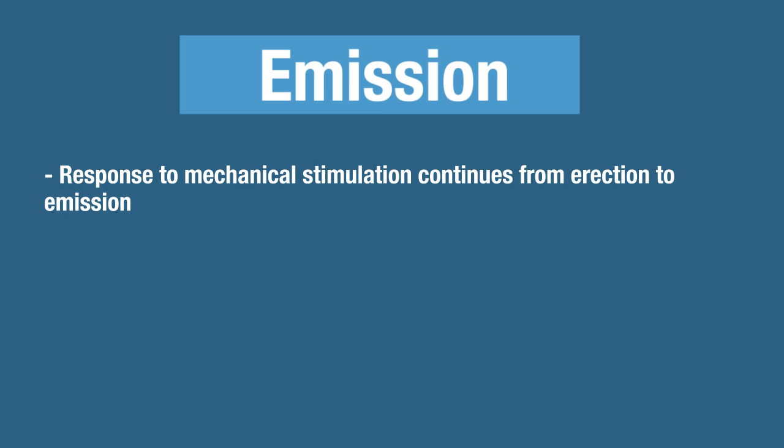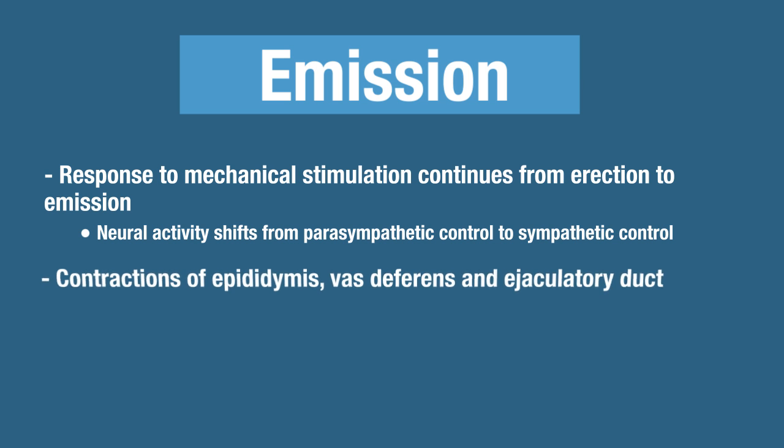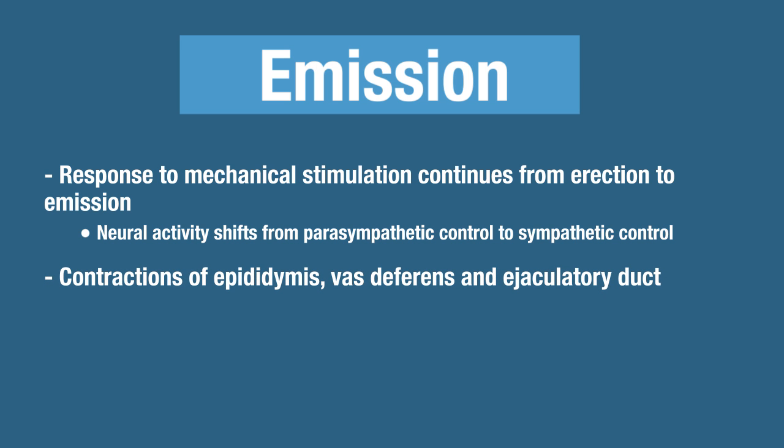The next phase is the emission phase. As the response to mechanical stimulation from erection continues, neural activity shifts from parasympathetic to sympathetic control. The sympathetic nervous system causes contractions of the epididymis, the vas deferens, and the ejaculatory duct. This means we are moving sperm — the sperm will be leaving the seminiferous tubules and traveling into the urethra.